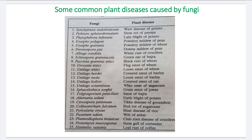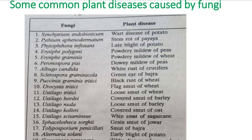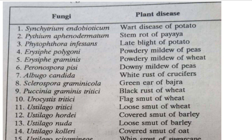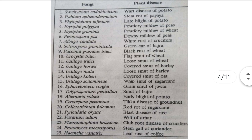This table gives us an idea of some common plant diseases caused by fungi. In the first column is the name of the fungus, and in the second column is the name of the disease. For example: Synchytrium endobioticum causes wart disease of potato; Pythium aphanidermatum causes stem rot of papaya; Phytophthora infestans causes late blight of potato; Erysiphe polygoni causes powdery mildew of peas; Erysiphe graminis causes powdery mildew of wheat. There are 25 diseases listed in the table caused by different fungi.